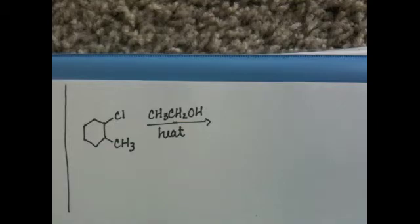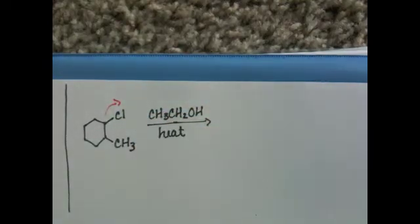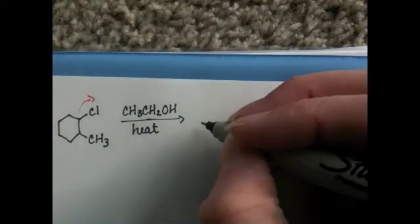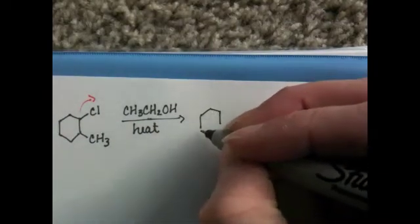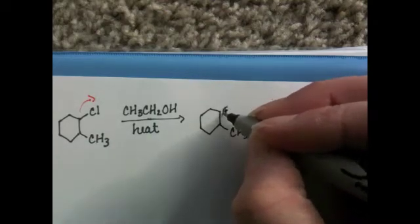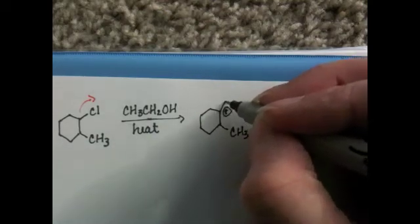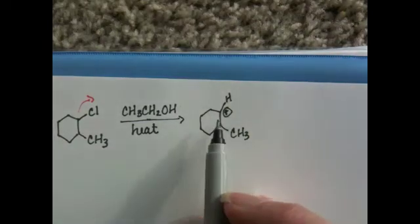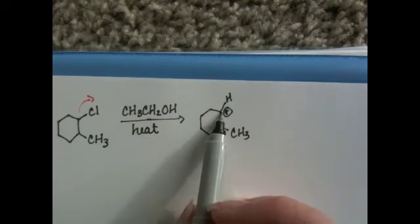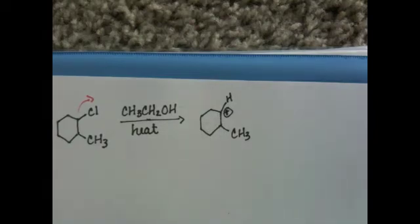SN1 mechanisms are always going to start by loss of the leaving group. So SN1 reactions are always one molecule falling apart. That's what the one represents. And that gives us this carbocation. Don't forget that there is a hydrogen on that carbon.